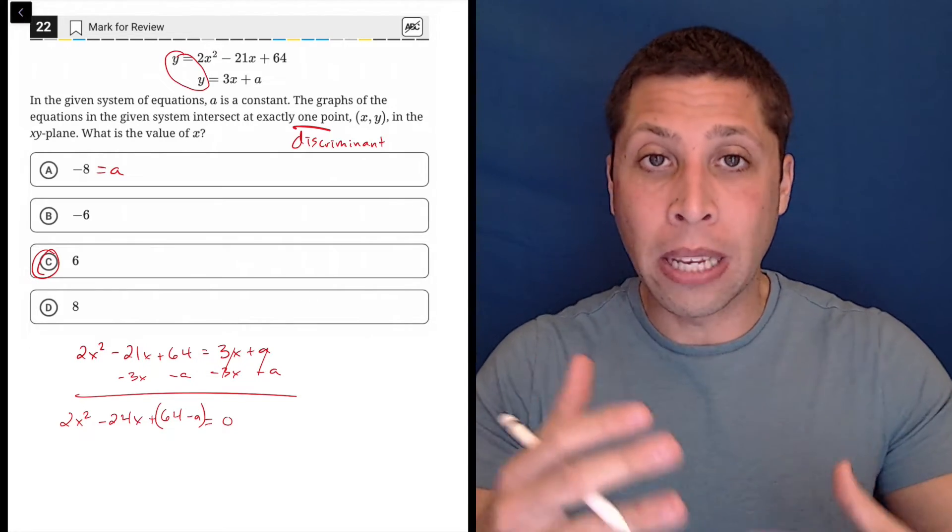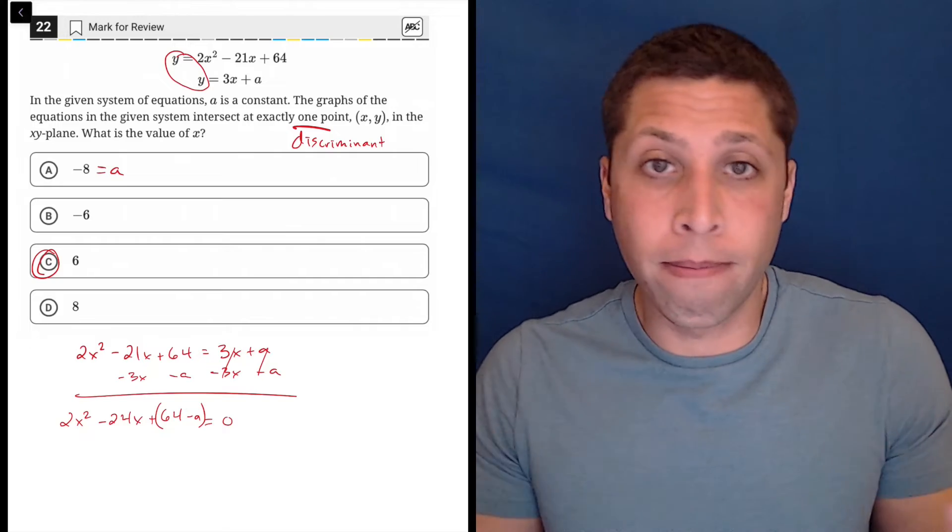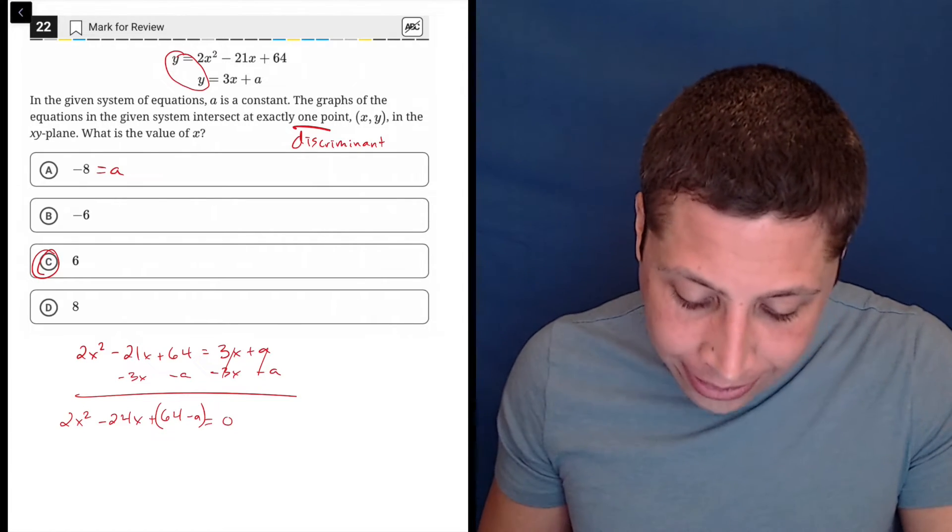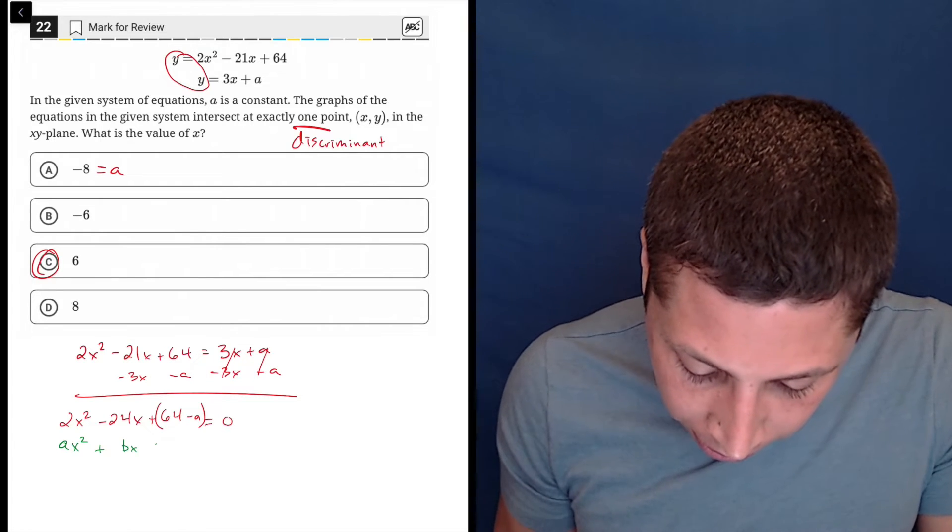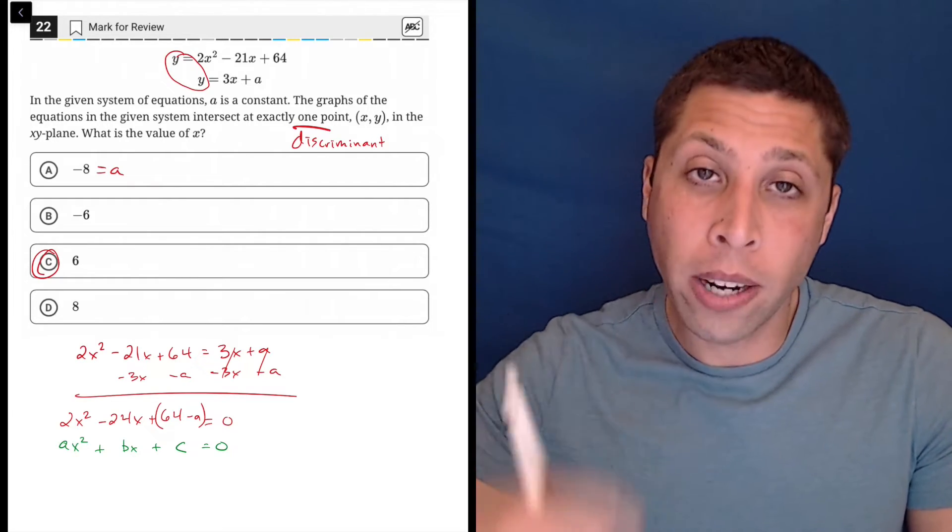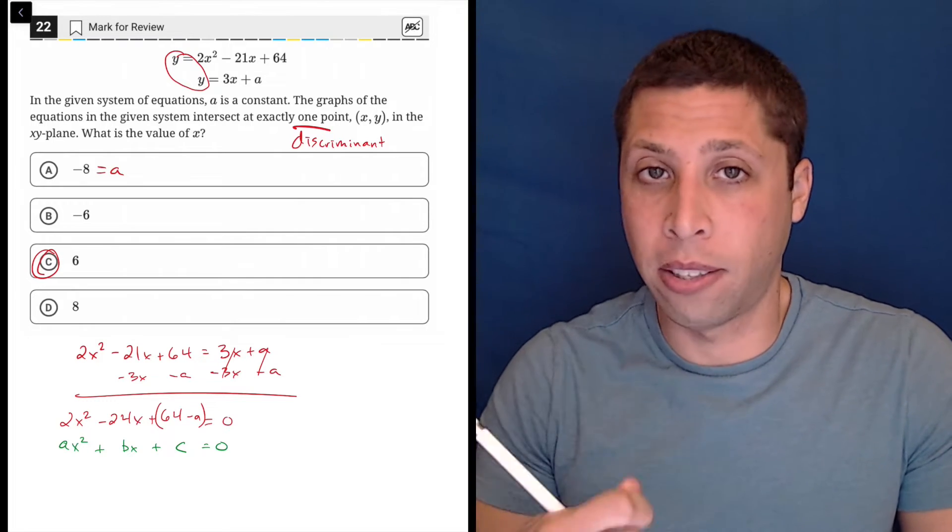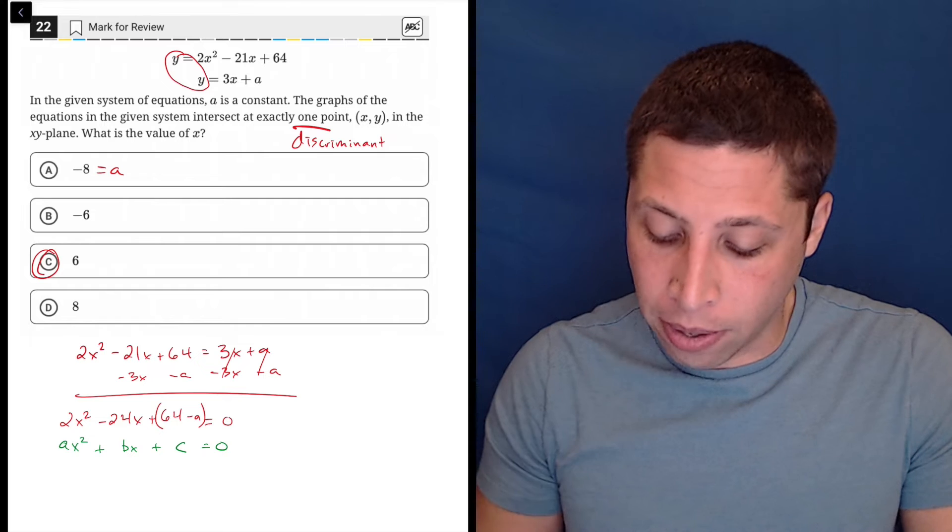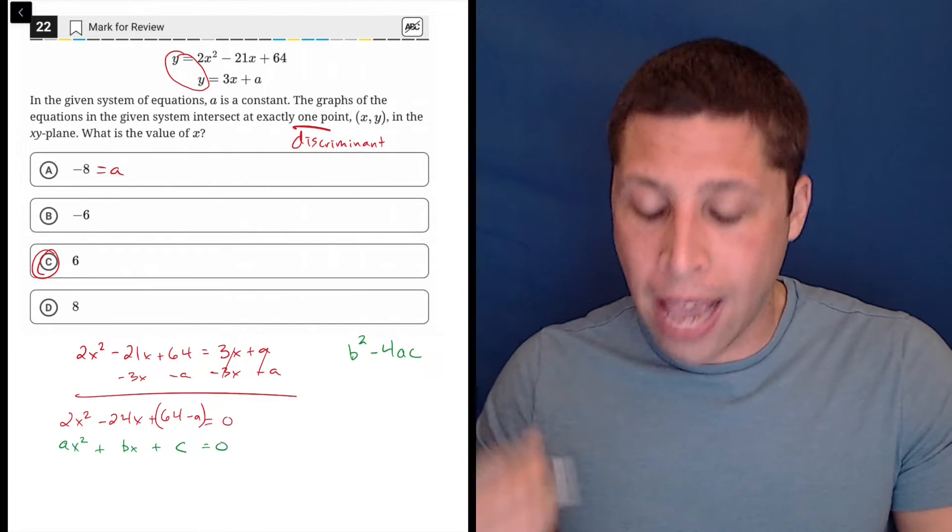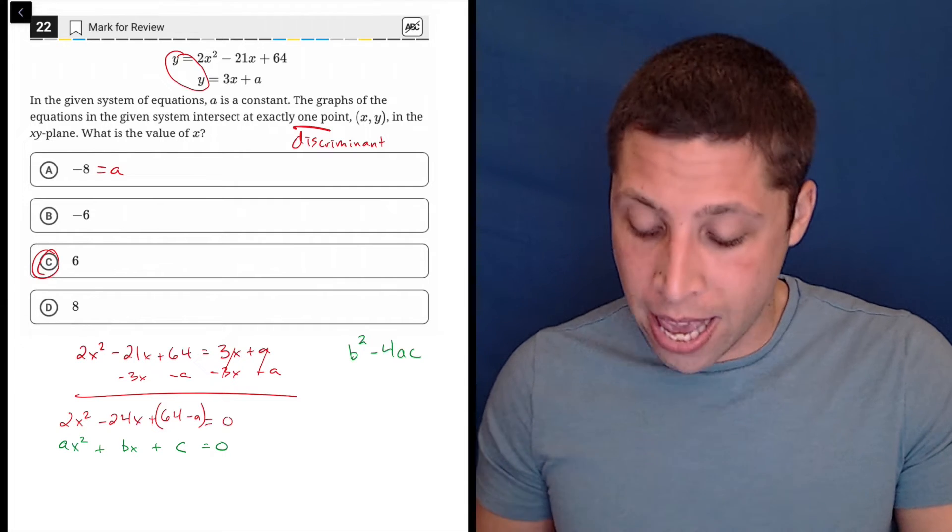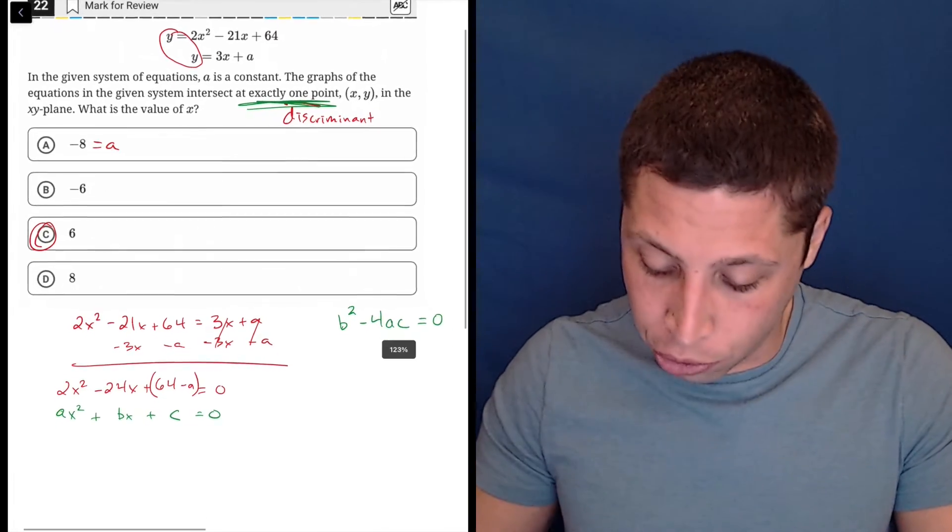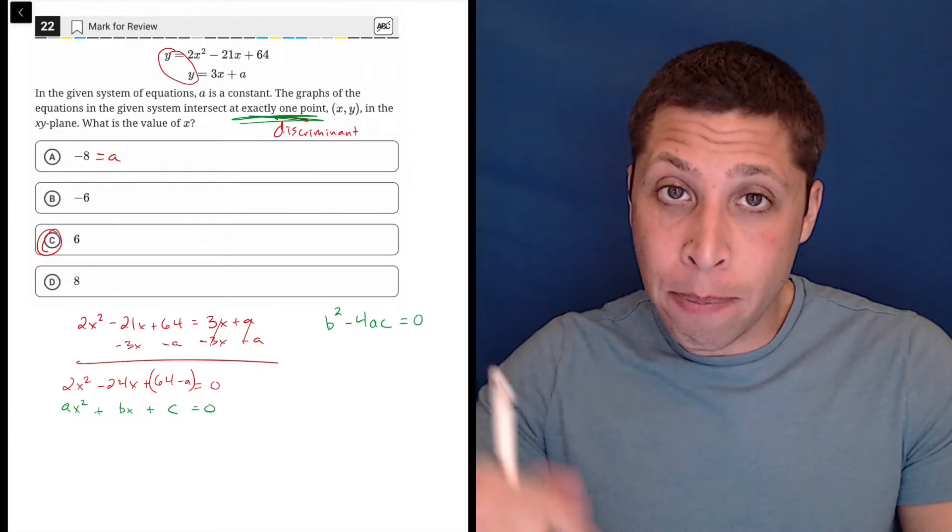And here we have 2x squared minus 24x plus 64 minus a, and I'm going to throw some parentheses around 64 minus a. And that's because I can't combine those terms because they're different, right? 64 and a, I don't know what that a is. I can't mush them together, but I really want to because both of those together are going to give me the c term of this equation, right? This is a parabola in standard form. And this is where that discriminant piece comes in. Because if I want to find the number of x-intercepts or in this case solutions to this parabola, I need to think about the discriminant which is given by b squared minus 4ac. This is part of the quadratic formula. It's the part under the radical. And this part tells me how many x-intercepts there's going to be. If it is equal to zero, then I know that I have exactly one solution.